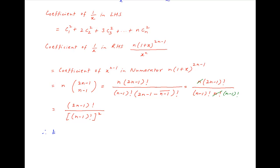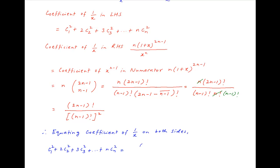Equating the coefficients of 1/x on both sides, we get C1² + 2·C2² + 3·C3² + ... + n·Cn² = (2n−1)! / [(n−1)!]², which is the required result.